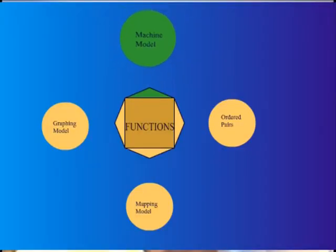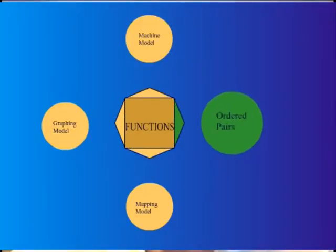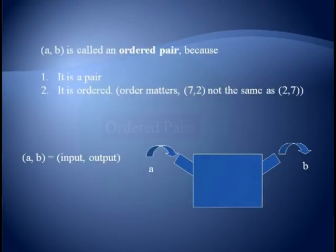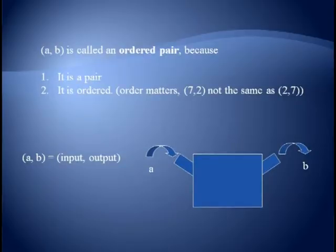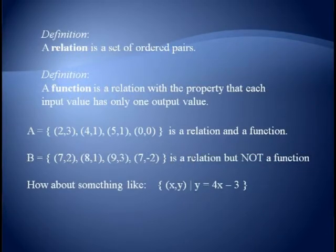Now, let's go to our next model, which is defining functions using ordered pairs. We use the notation (a, b) in parentheses to denote an ordered pair. It's called an ordered pair because it's a pair of numbers, and it's ordered. That is, order matters. (7, 2) is not the same as (2, 7). When we use ordered pairs, we want the first number to correspond to our input value and the second number to be our output value. So we have a couple of definitions. A relation is a set of ordered pairs, and a function is a relation where each input value has only one output value.